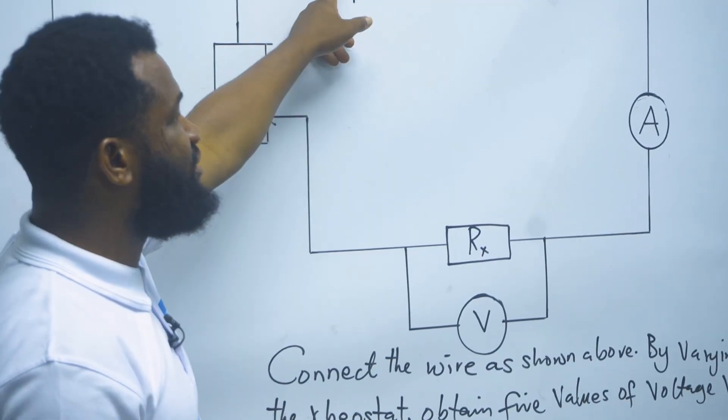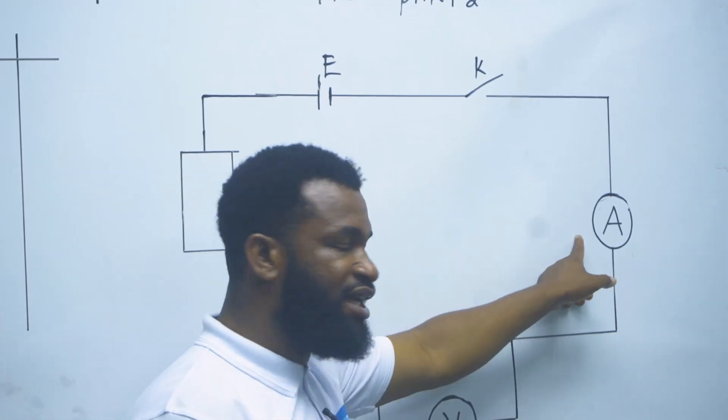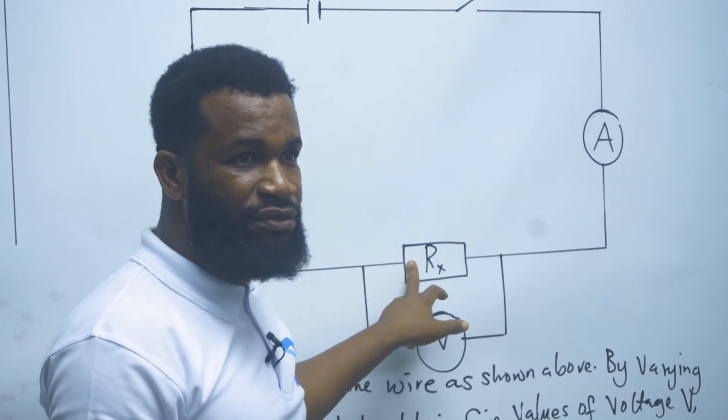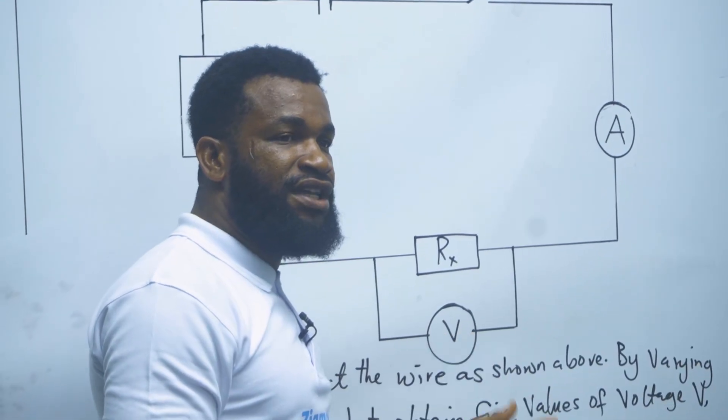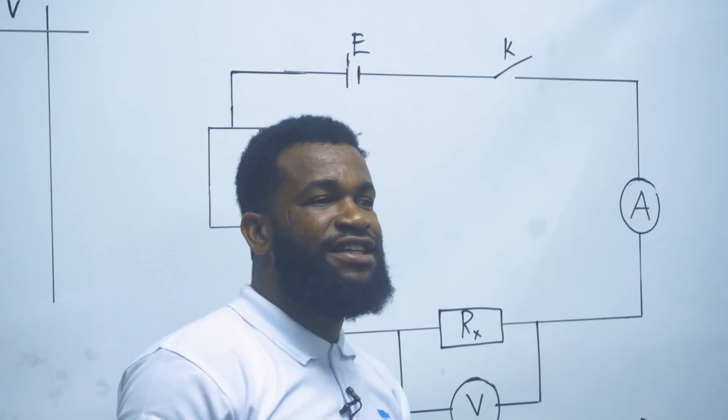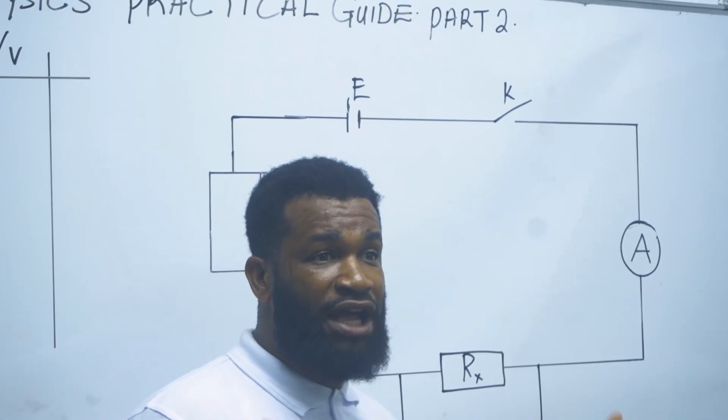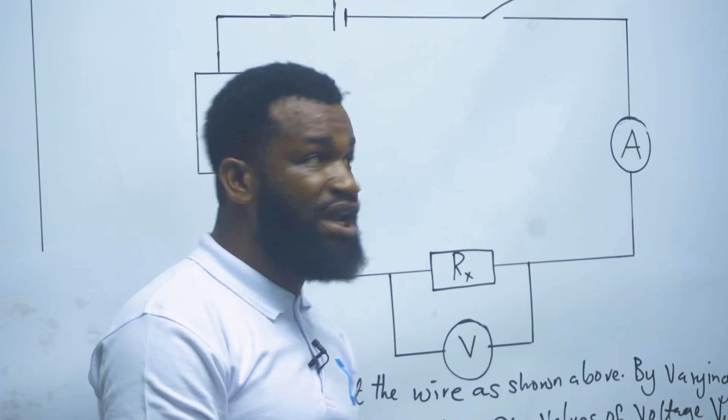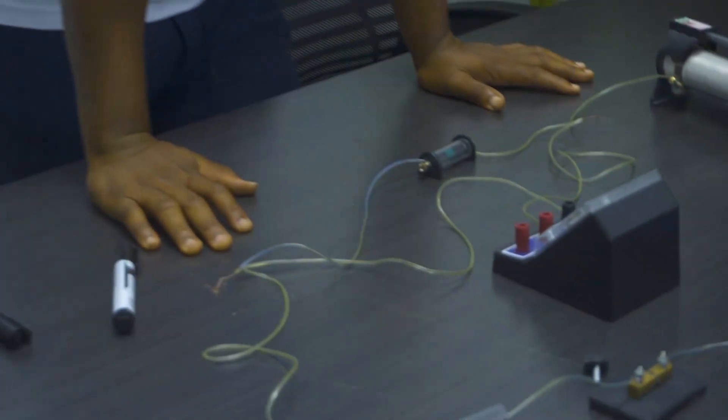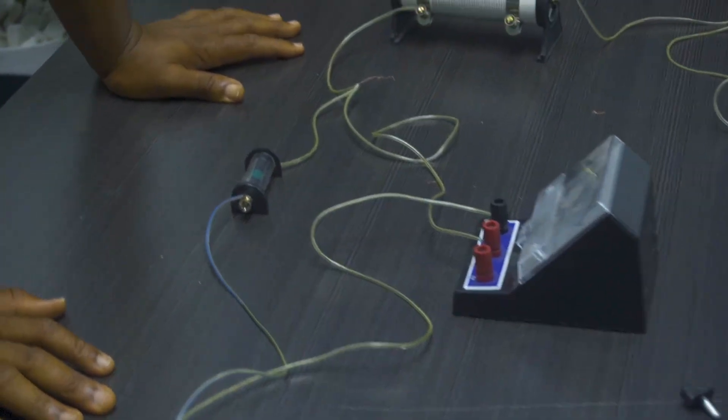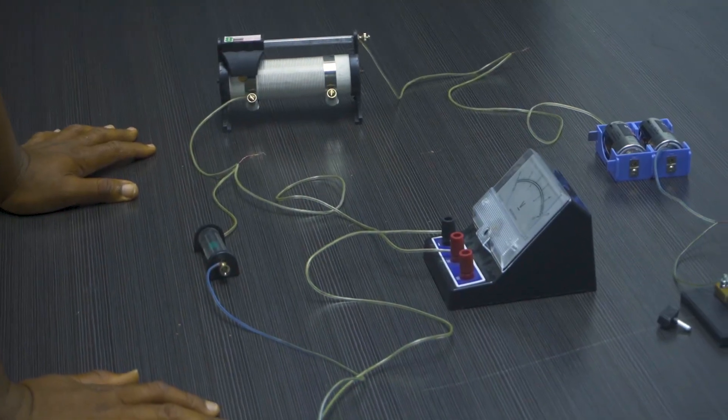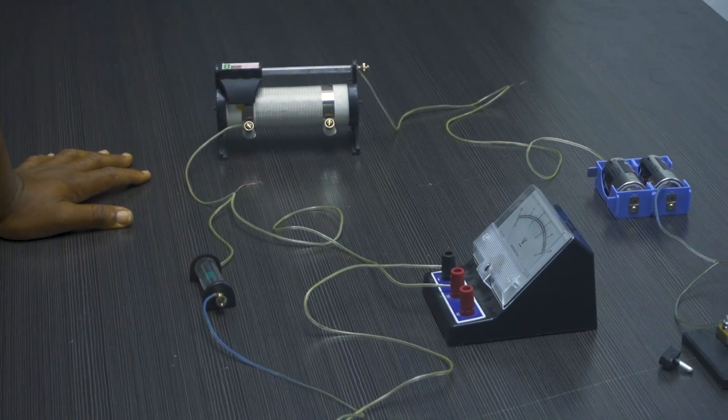And this is the battery, and this is the key, and this is the ammeter, and this is the resistance I am looking for, and this is the voltmeter. Now remember in part one I used a potentiometer. Maybe I am going to combine all of them in one experiment, but for now this is part two. Okay, now this is how the setup is.